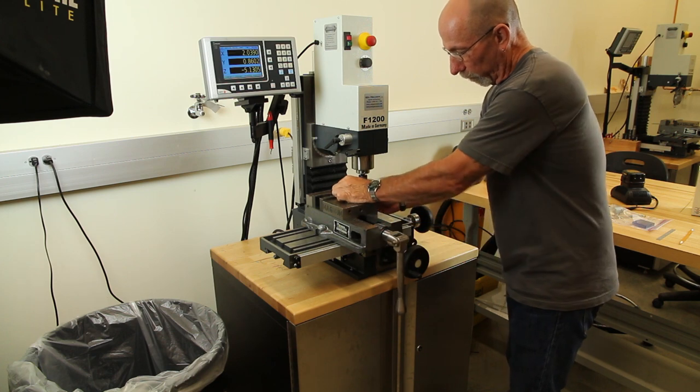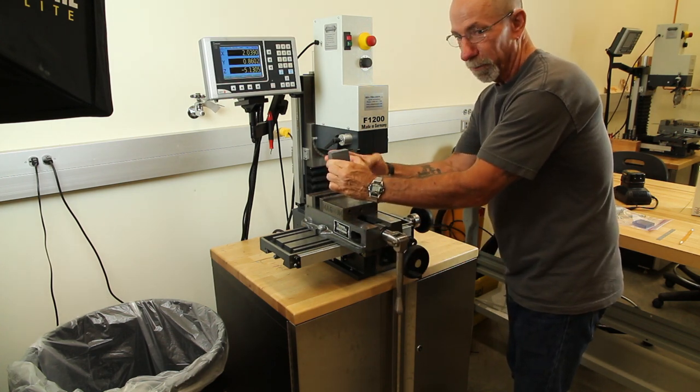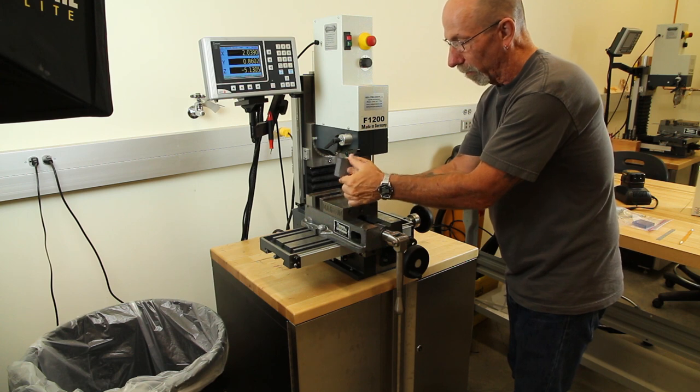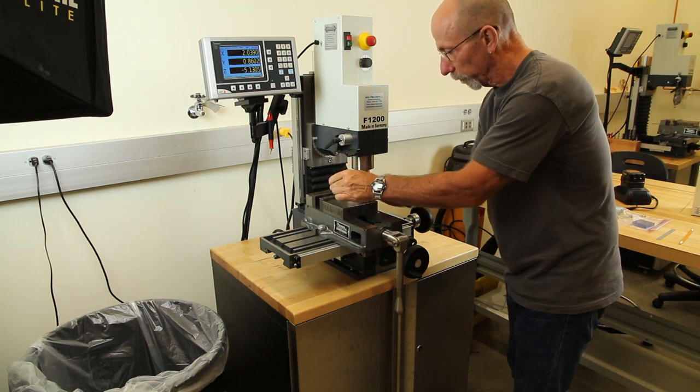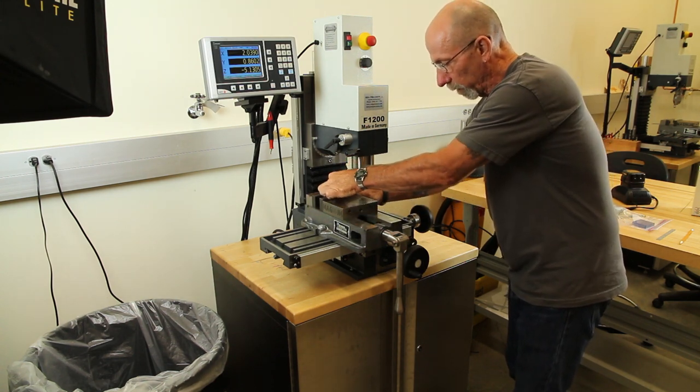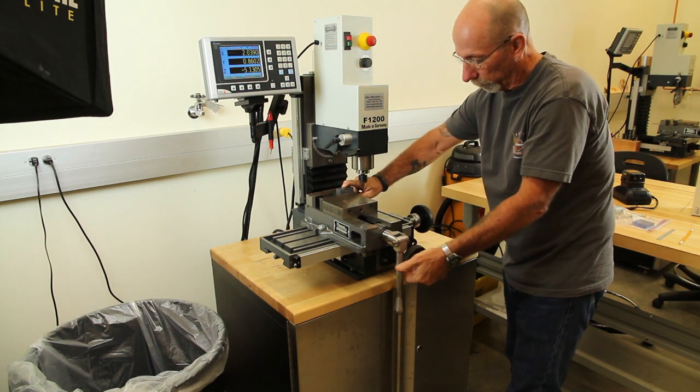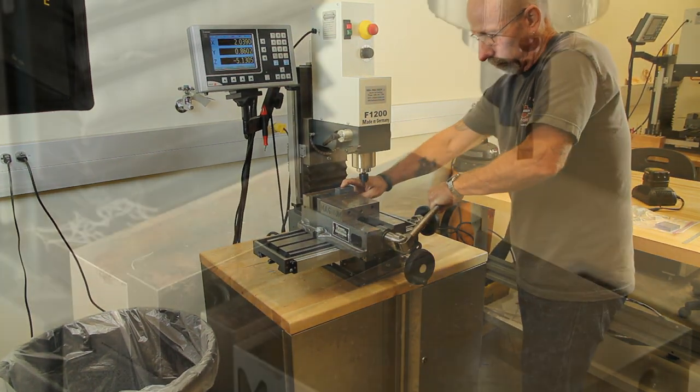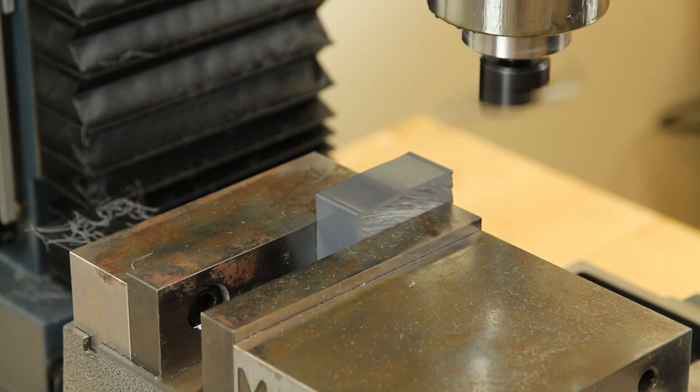Now I'm going to flip this over, making sure that this is the same surface against that solid wall. After flipping the piece, we use the fly cutter to shave material off the opposite face. As long as the clean face is down against the bottom of the vise, we'll have two parallel faces.